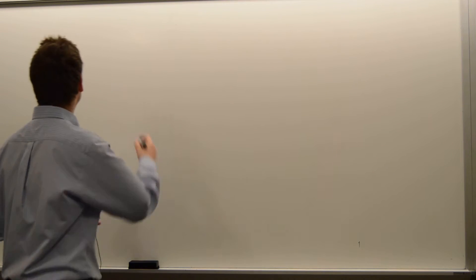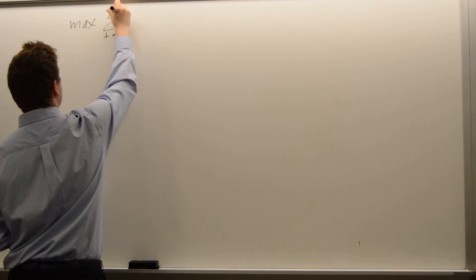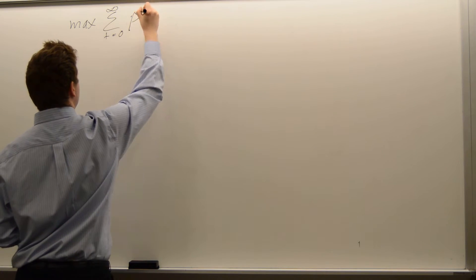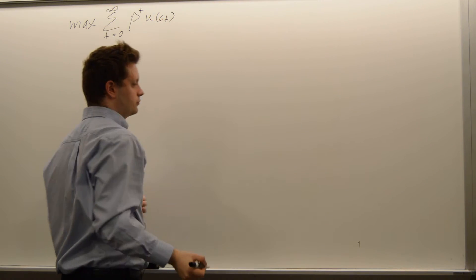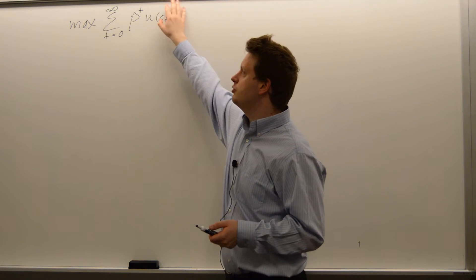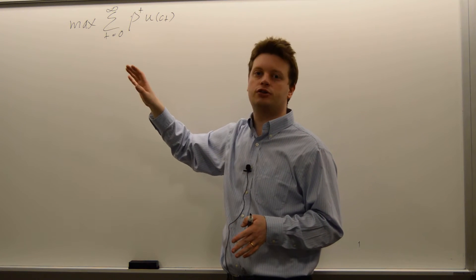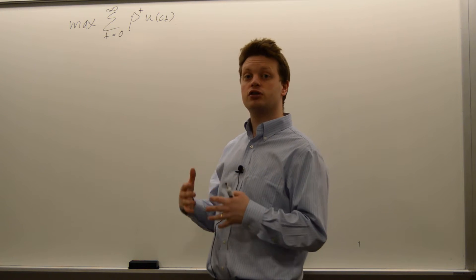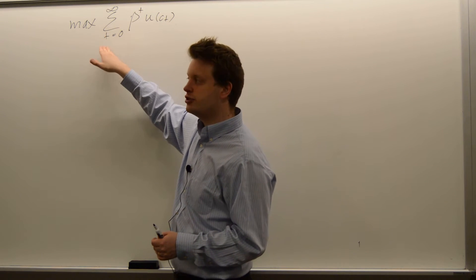Let's start with a simple infinite horizon maximization problem. Let's assume you want to maximize the following function. You maximize the sum from t equals 0 to infinity of beta to the power of t — that's our discount factor — times u of ct. We have a consumption good that we can consume every period. We get some utility from that, and in the future, in the far distant future, we don't care as much about the utility we get relative to the utility we get from consumption today. So it's infinite horizon because we sum up all the utilities we get from today up to infinity.